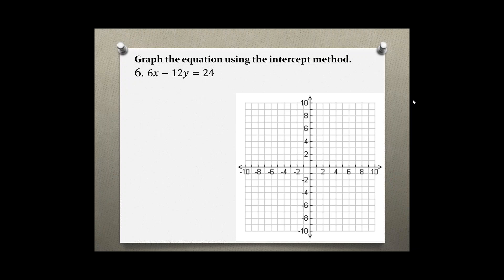Graph the equation using the intercept method. Problem number 6: 6x minus 12y equals 24.